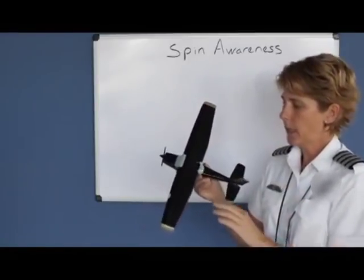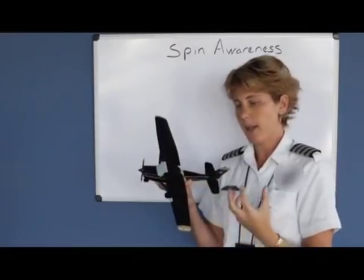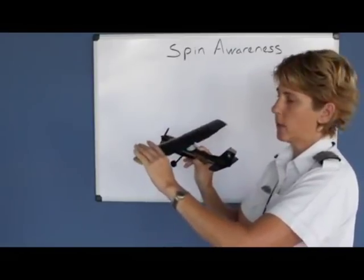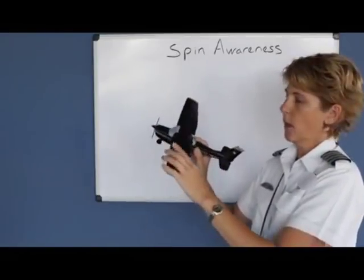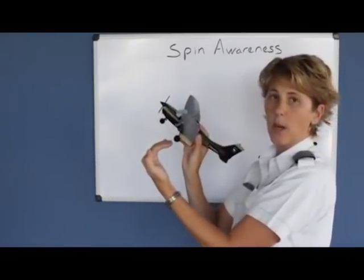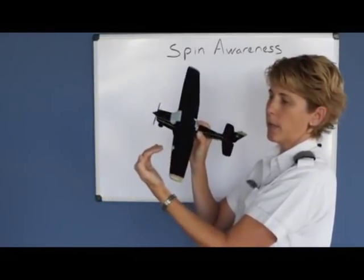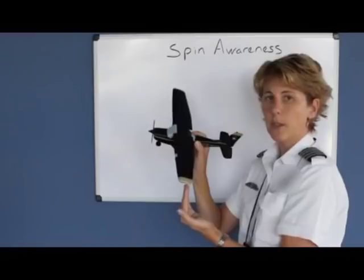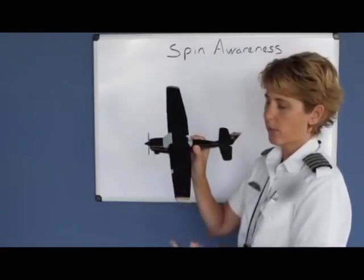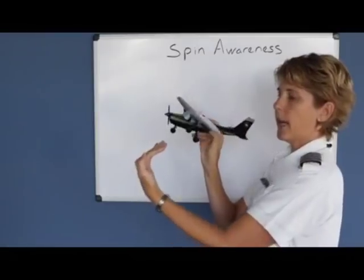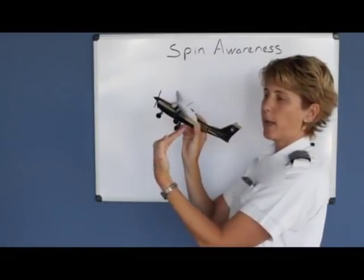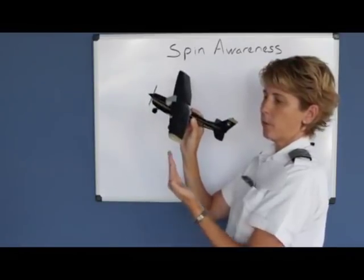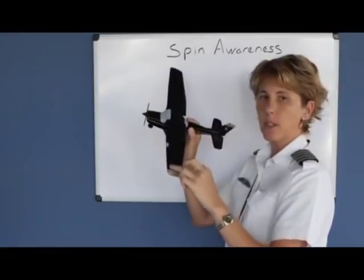We need to look at each wing independently to see how the angle of attack is affected. When the lower or inside wing drops, the relative wind changes. The relative wind came from a direction that caused the stall, but when that wing dropped suddenly, the relative wind changed positions. The relative wind is opposite the flight path, so if the wing drops, opposite its flight path would be from underneath. We've already exceeded our critical angle of attack, and now when the wing drops, we've worsened that angle of attack and deepened the stall in that wing.